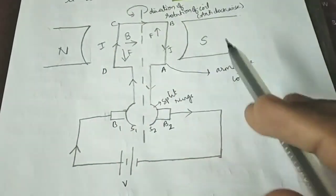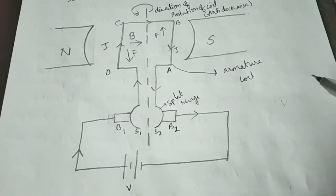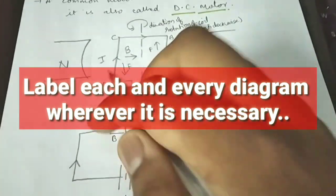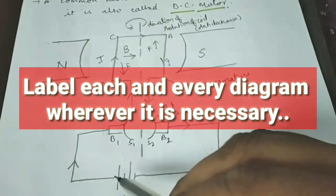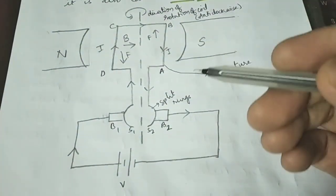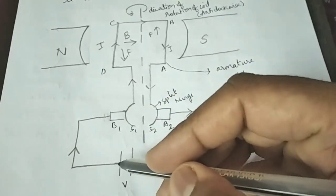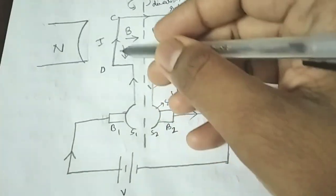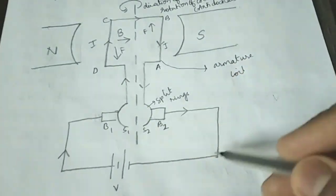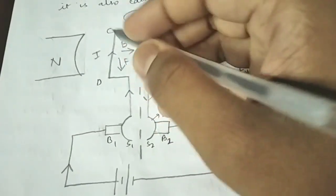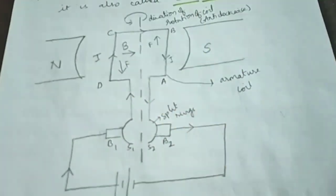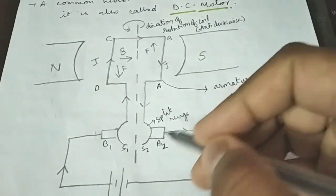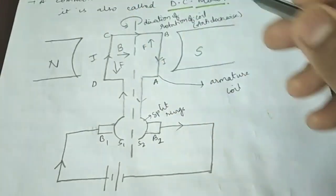If you just draw it without labelling you are going to get only one mark. You need to label it. Show the direction of current — it flows from positive terminal to negative terminal, going from the brushes to the commutators to the rectangular coil and back. Label the rectangular coil ABCD, write down split rings and carbon brushes, and show the direction of rotation of the coil.